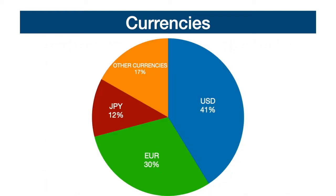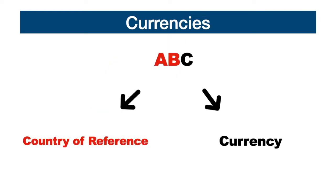41% of world trades are made in US dollars, 30% in euros, 12% in Japanese yen, and the remaining 17% in other currencies. Currencies consist of three letters: the first two represent the country of reference, while the last represents the name of the currency. Let's see some examples for the major currencies.